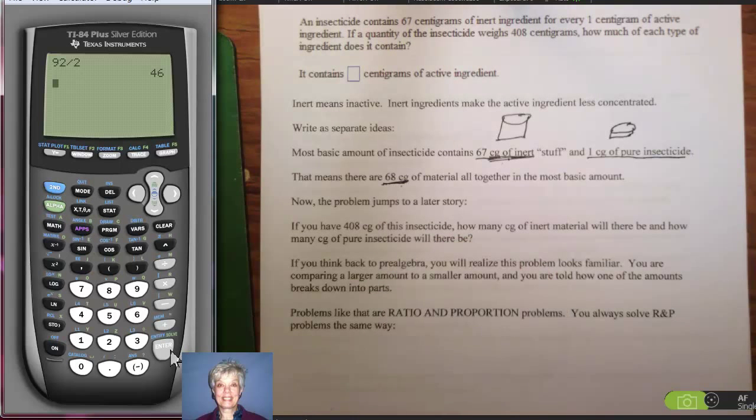So this is the ratio of inert to active. Now, somebody brings you 408 centigrams. Let's go back to the beginning. An insecticide contains 67 centigrams of inert ingredient for every 1 centigram of active ingredient. So we decided that in a group of 68 centigrams, there are 67 inert and 1 active. Now, if a quantity of insecticide weighs 408 centigrams, how much of each type of ingredient does it contain?